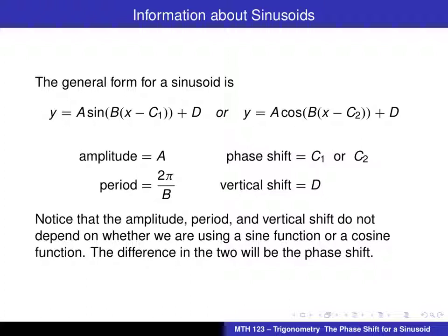Here's what we already know, and this is called the general form for a sinusoid. It might be just as appropriate to call it the standard form for a sinusoid. That really doesn't matter. The key here is that when we have this expression written in exactly this form, notice it's really the same for both sine and cosine. We will be able to read the amplitude, the period, the phase shift, and the vertical shift. This is assuming, of course, that A is positive and B is positive.